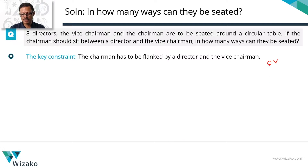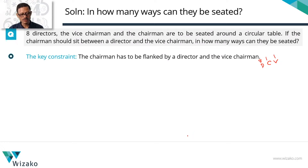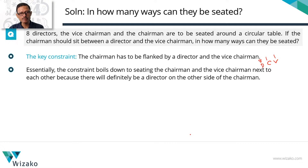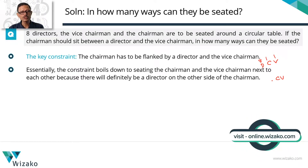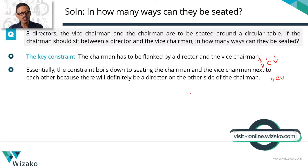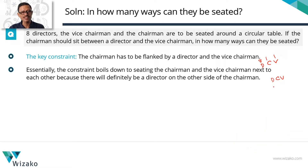The chairman needs a vice-chairman on one side and a director on the other — not a specific director, just some director. The team comprises eight directors, one chairman, and one vice-chairman. The constraint actually boils down to just seating the chairman and vice-chairman next to each other, because if the vice-chairman is on one side, the other side has to be a director — there is no one else in the team. So we only need to ensure the chairman and vice-chairman are placed next to each other.